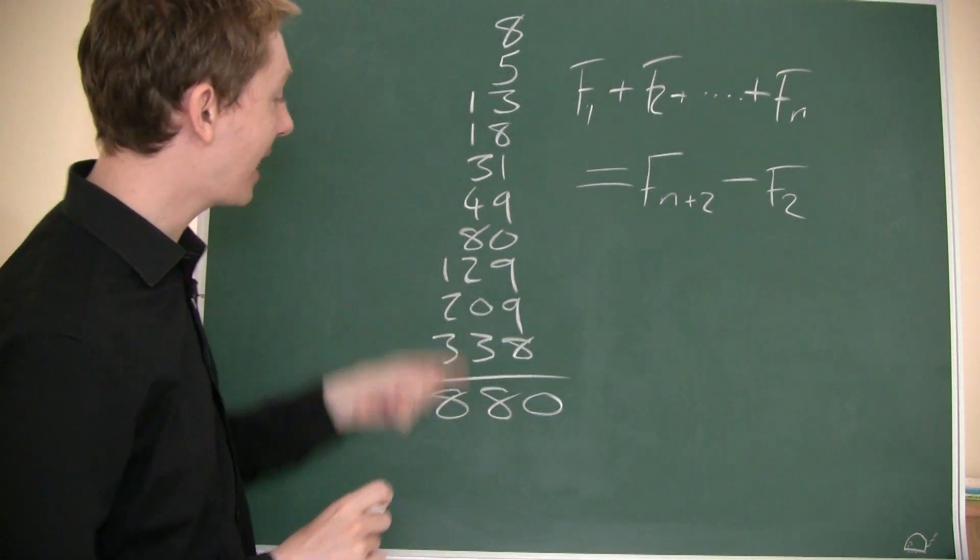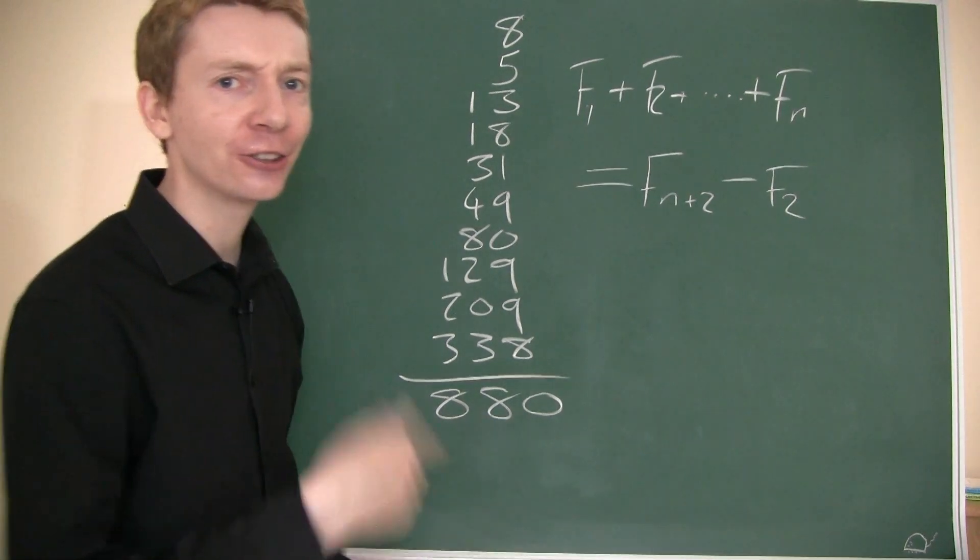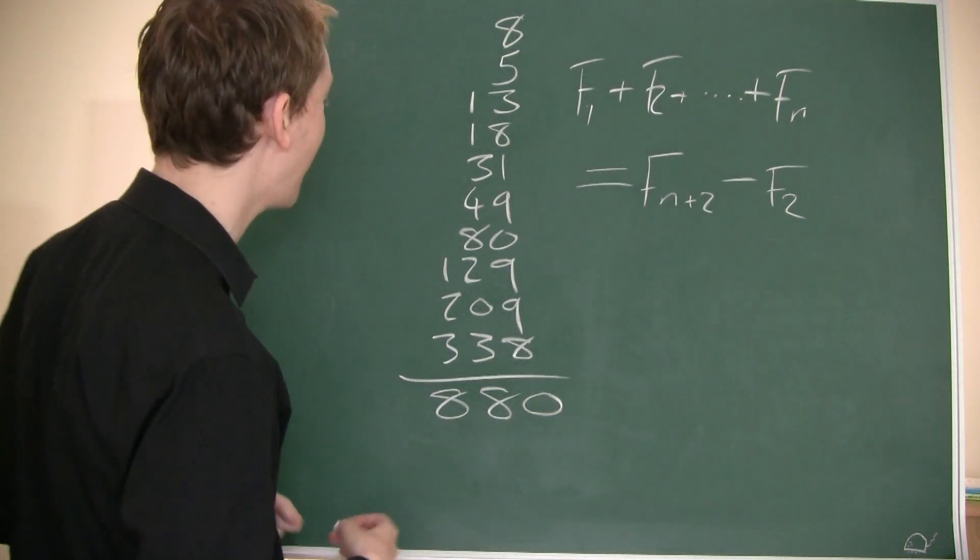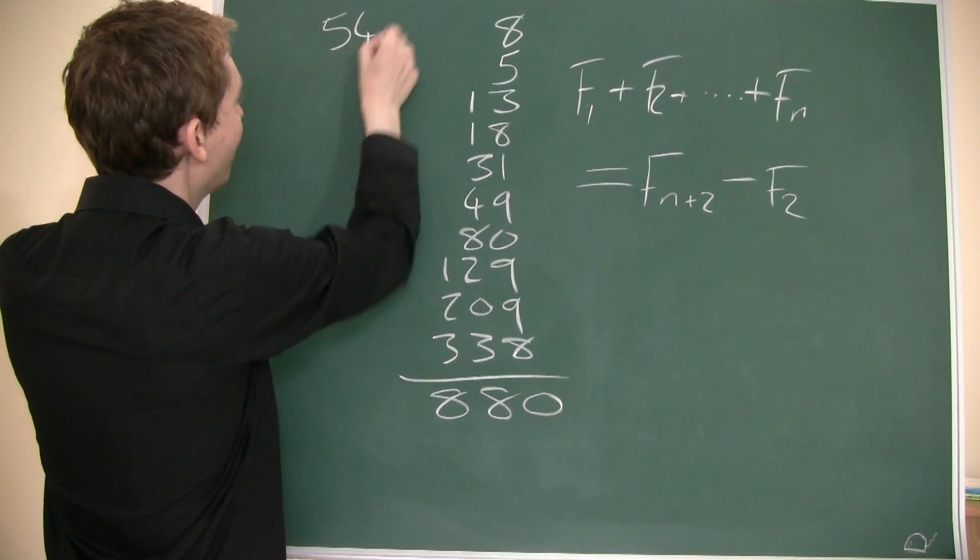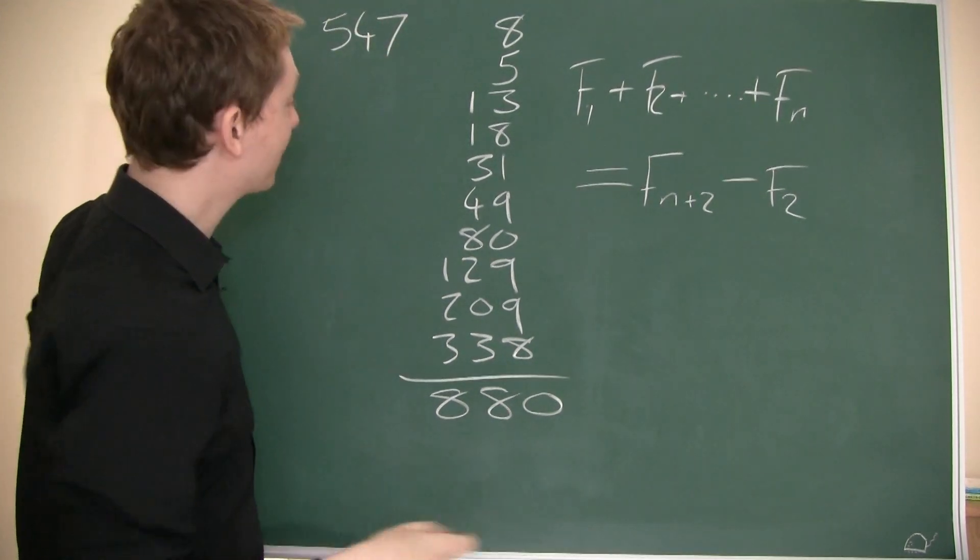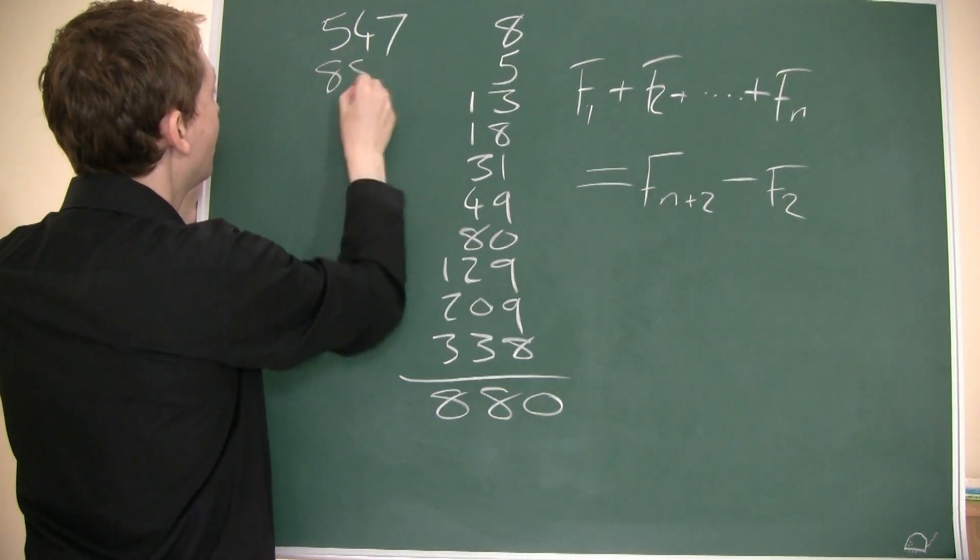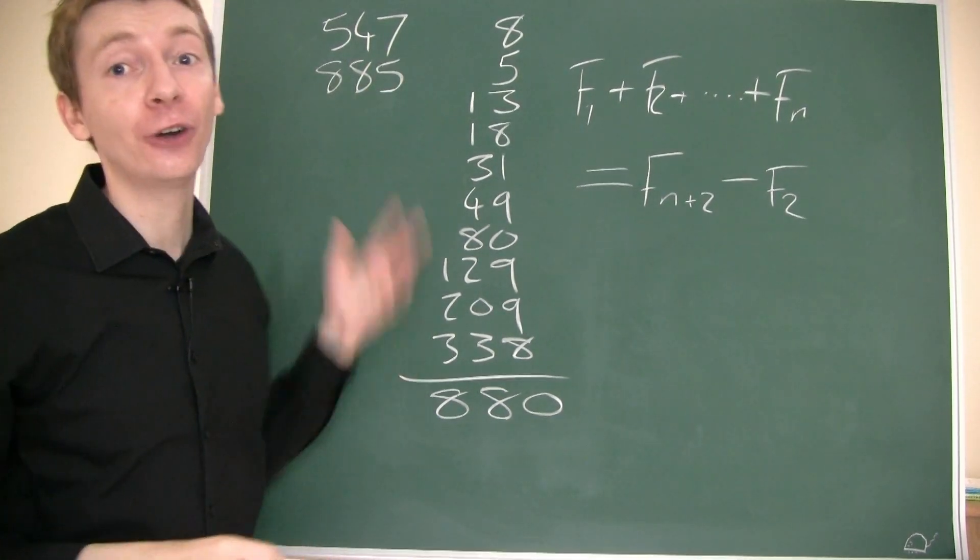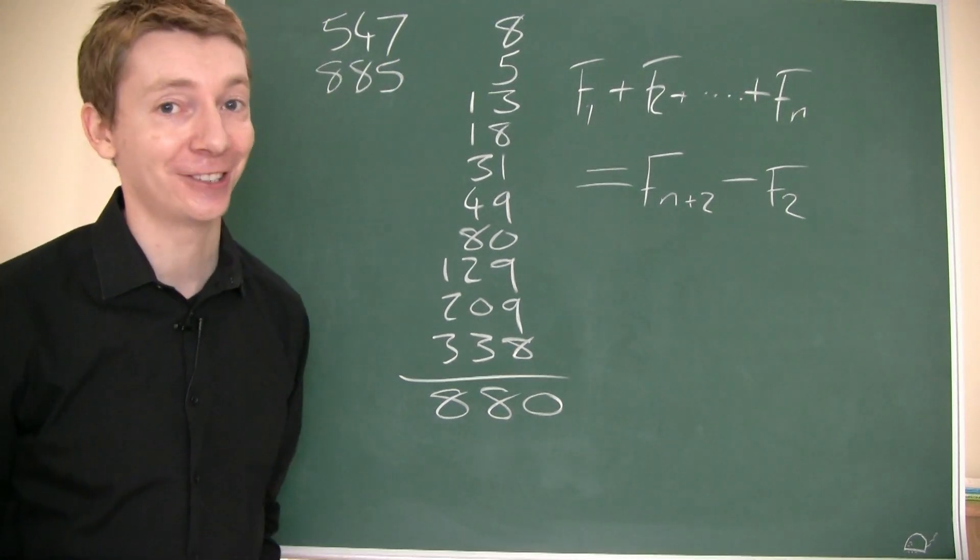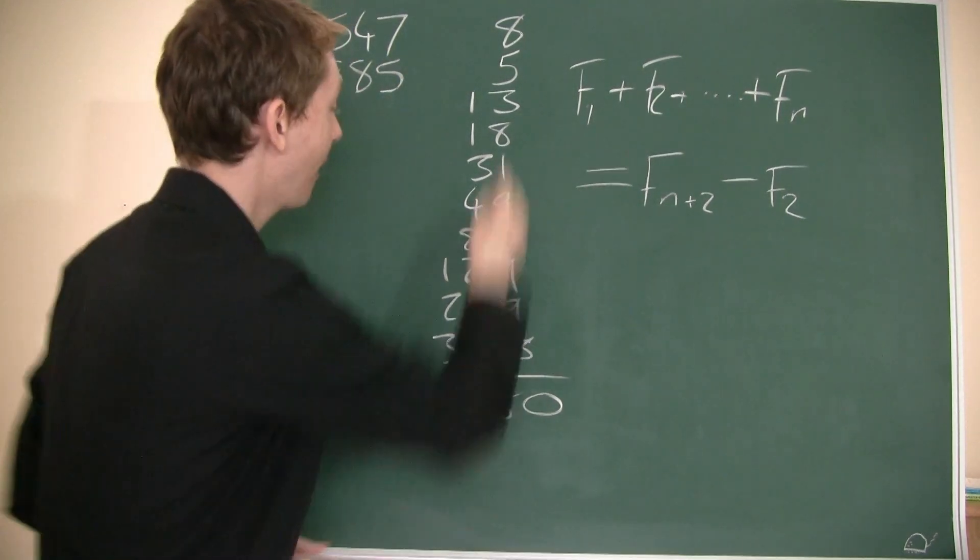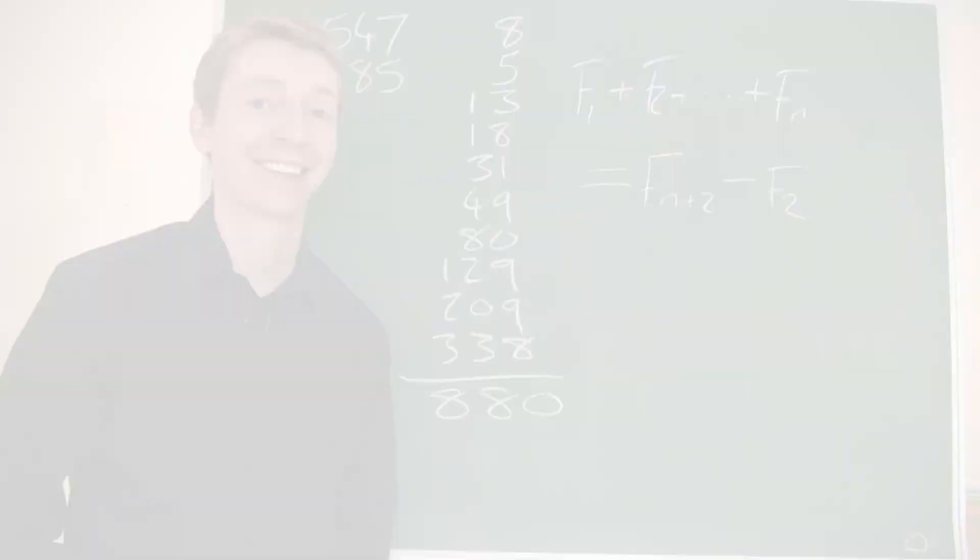But in this case, let's see if we can do it. So we had the first 10 numbers here. Let's just continue the sequence for a couple more steps. So the 11th step is 547. And the 12th step, so if I add now 10 and 11 together, I will get 885. And look, it is true. The 12th step minus the second step is the sum of the first 10. 880, like I said.